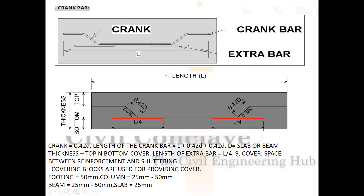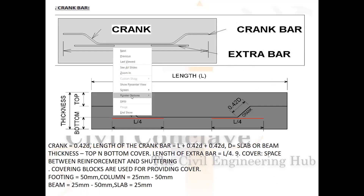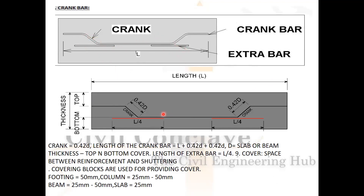A crank bar looks like this. The crank length is 42d. This is the additional extra bar. The top portion is L/4, and there is a top bar and a bottom bar. Length of the crank bar = length + 42d + 42d, where d = slab or beam depth minus top and bottom cover.